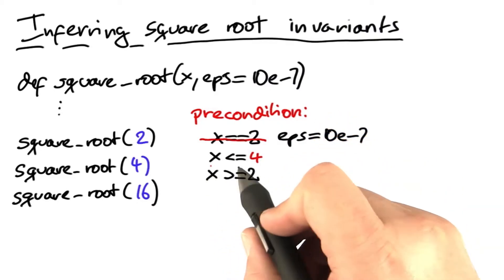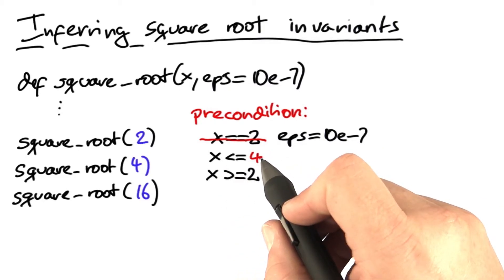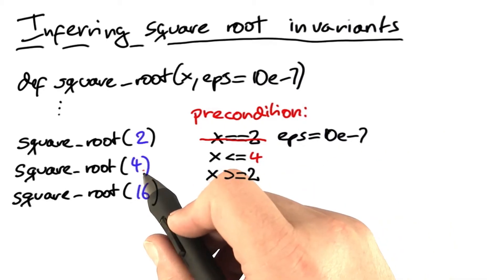What we get now, however, is that x being less or equal than 4 still holds. We can do so by merging the earlier invariant with the new one. And x greater or equal than 2 still holds for the new value.